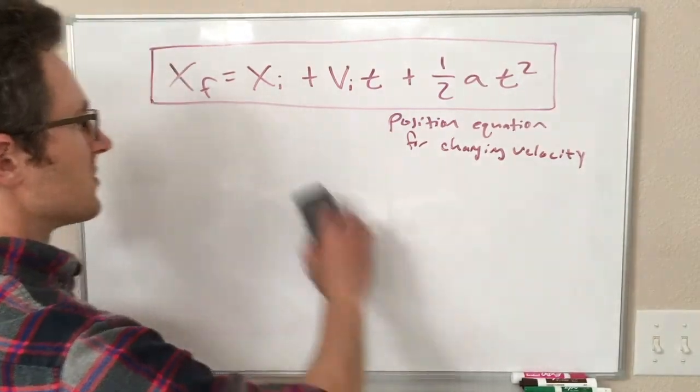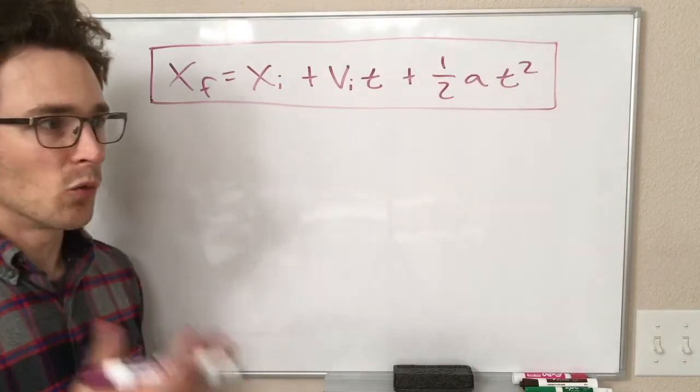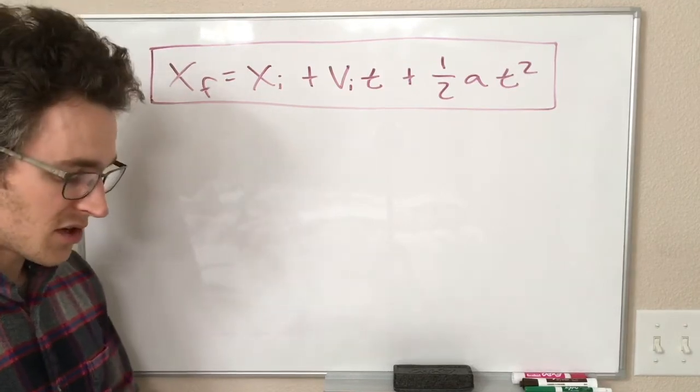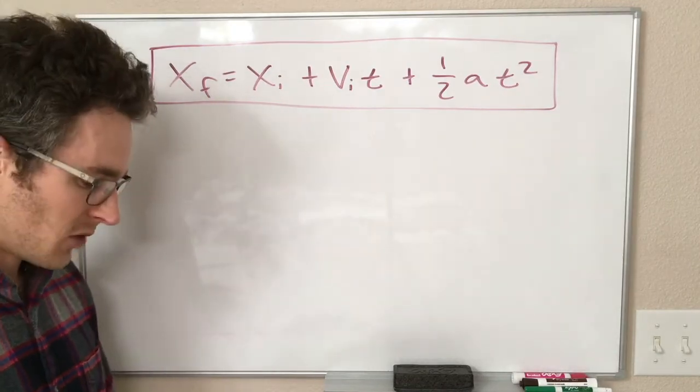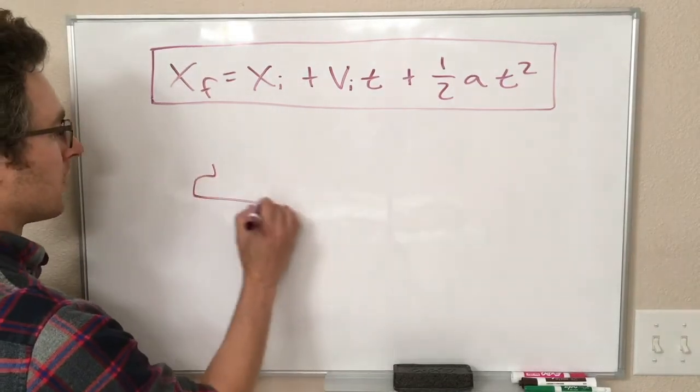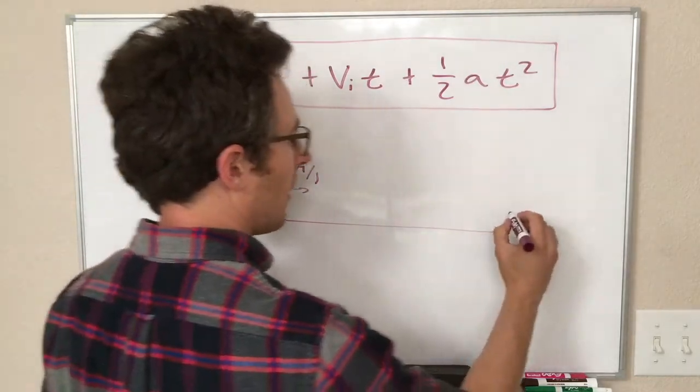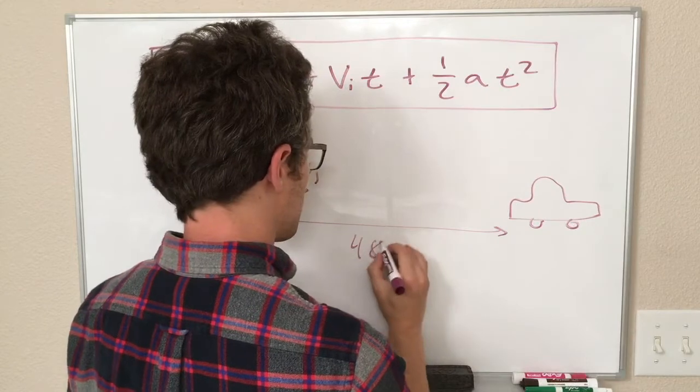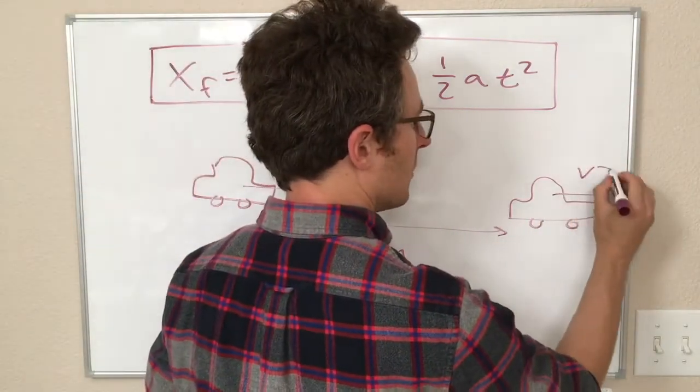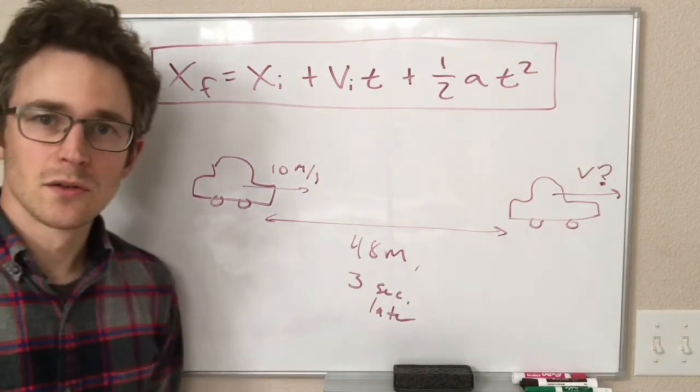Before we move on, let's do a little example using this equation. I'll say it in words and then we'll do a picture on the board. Let's say I have a car that is moving to the right with an initial velocity of 10 meters per second. It undergoes some unknown acceleration, and three seconds later it is measured to be a distance of 48 meters from where it started. So we have a car moving to the right at 10 meters per second. Somehow it ends up 48 meters away, and it takes it three seconds to get there. And over here it has some different velocity. We don't necessarily know what the velocity is over there. And we would like to know what its acceleration is.